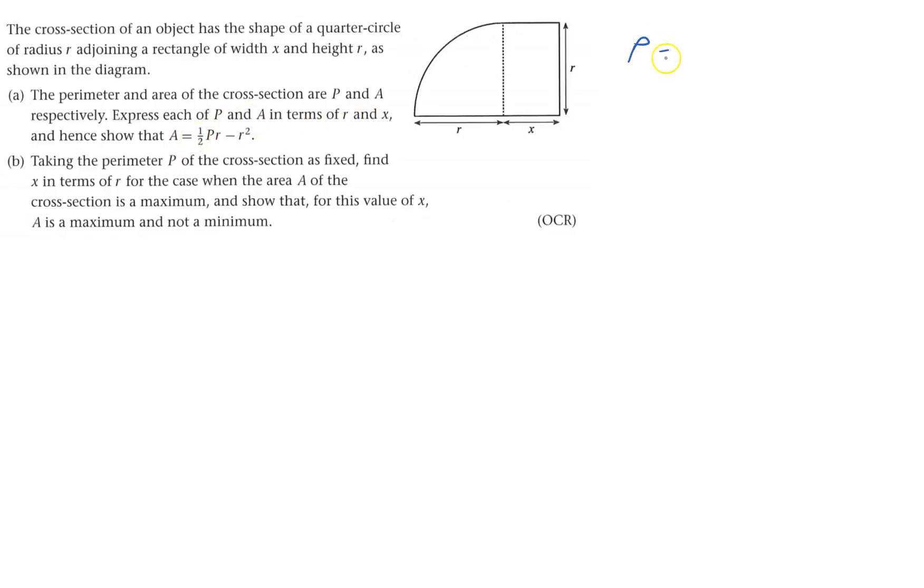So to start off with perimeter, it's the whole way around the edge. I've got one r here and another r there so that'll be 2r. I've got one x and another x so that'll be plus 2x and I've got plus a quarter of the whole circle which is 2πr. So a quarter times 2πr.